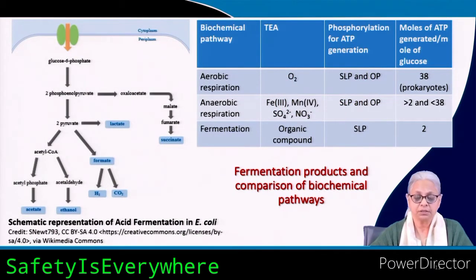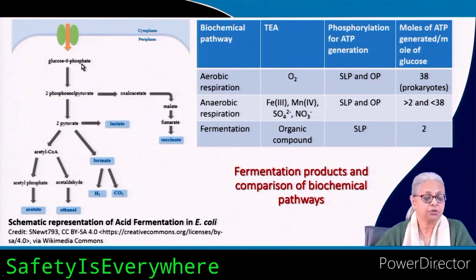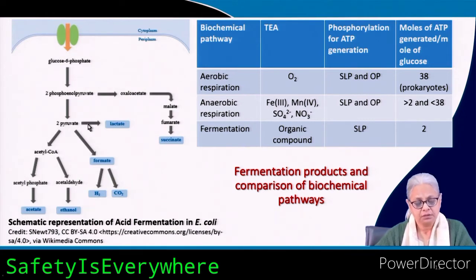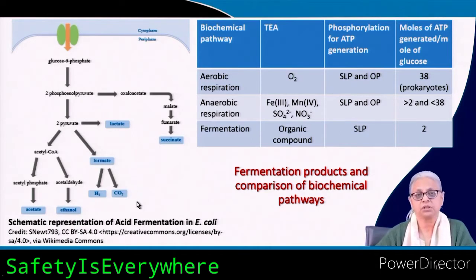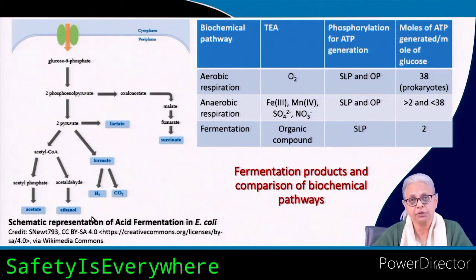Uncouplers are compounds that prevent ATP synthesis without impacting the electron transport chain — examples include dinitrophenol and dicumerol. As an example of fermentation in E. coli: glucose is phosphorylated to glucose 6-phosphate, then converted to phosphoenol pyruvate. PEP can be converted to oxaloacetate, malate, fumarate, and succinate. Pyruvate can be converted to lactate or lactic acid, formate, hydrogen gas and CO2, or acetyl-CoA, which further converts to acetate and ethanol. These are examples of fermentation end products.